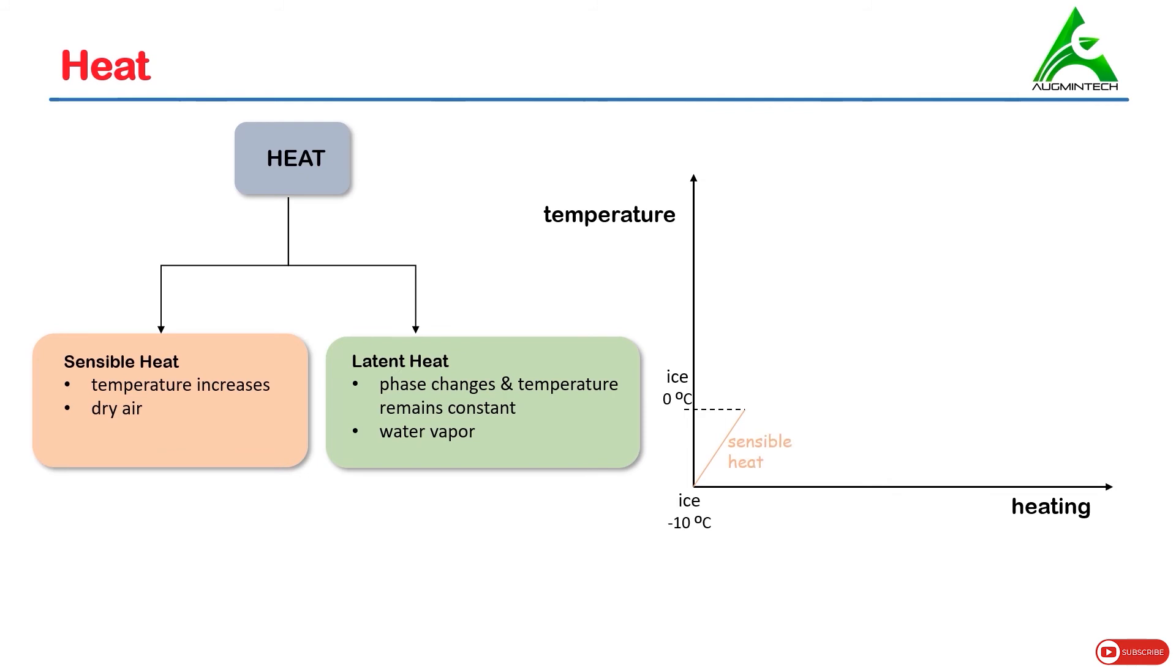Once ice reaches 0 degrees centigrade, on further heating it, its temperature does not change. However, its phase changes. Ice gets converted to water. In this process, the phase remains constant. Therefore, the heat is known as latent heat.